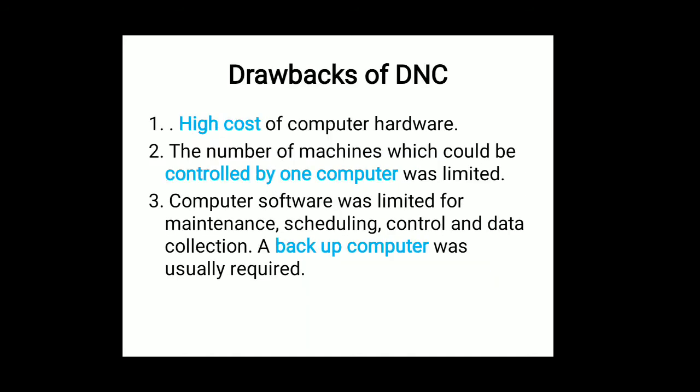Now the drawbacks or limitations of DNC. First, there is a high cost of computer hardware — since we are using automated machines, the cost is high. Second, the number of machines that can be controlled by one computer is limited — the central computer can control only a limited number of machines. Third, computer software is limited for maintenance scheduling, control, and data collection. A backup computer is usually required. Since the system is software-based, it requires storing all data for future purposes, making data collection, controlling, and maintenance more difficult.